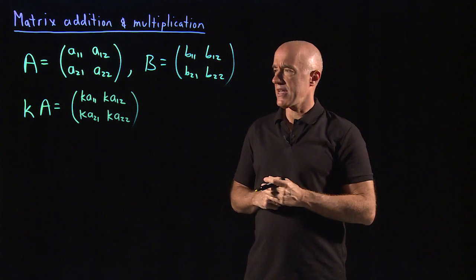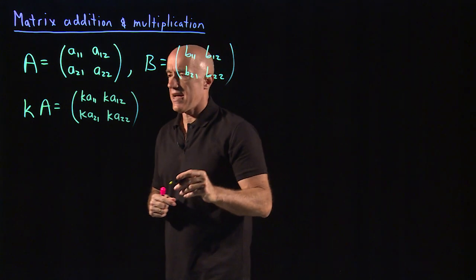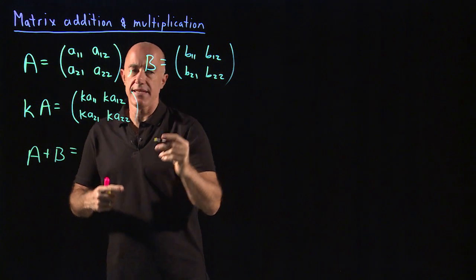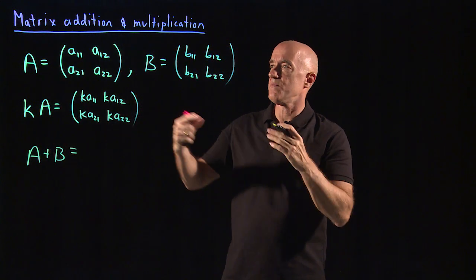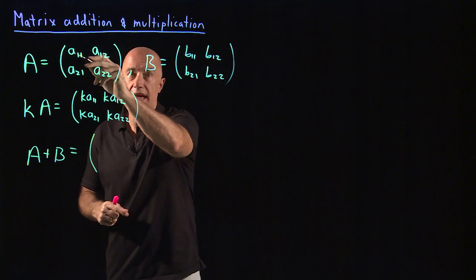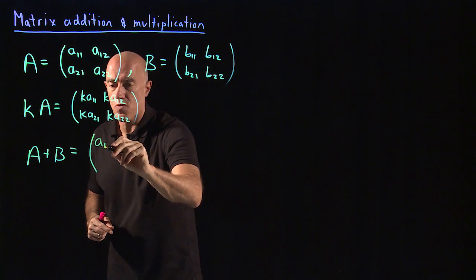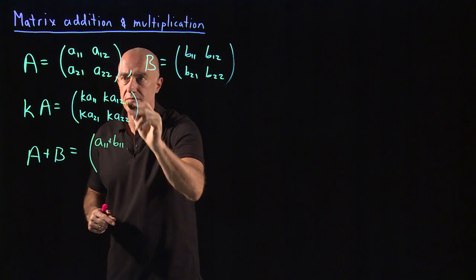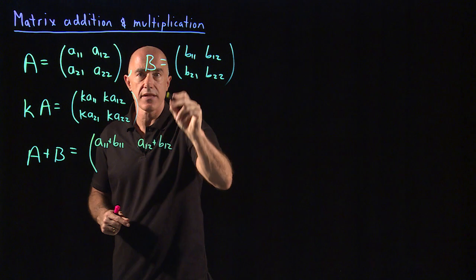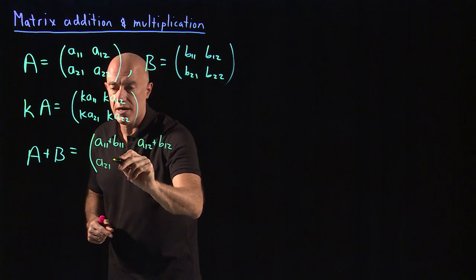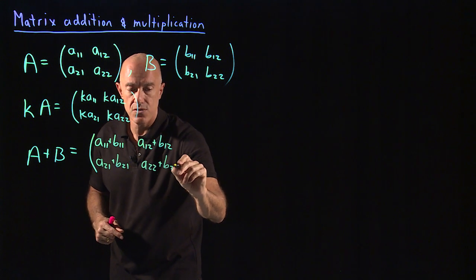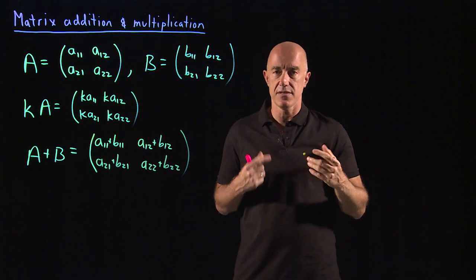On the other hand, we can add two matrices. If we add matrix A plus B, the matrices have to be the same size — so here they're both two by two. We just add them element by element. So we get A11 plus B11 in row one column one, and then A21 plus B21 and A22 plus B22. Matrix addition is simple.